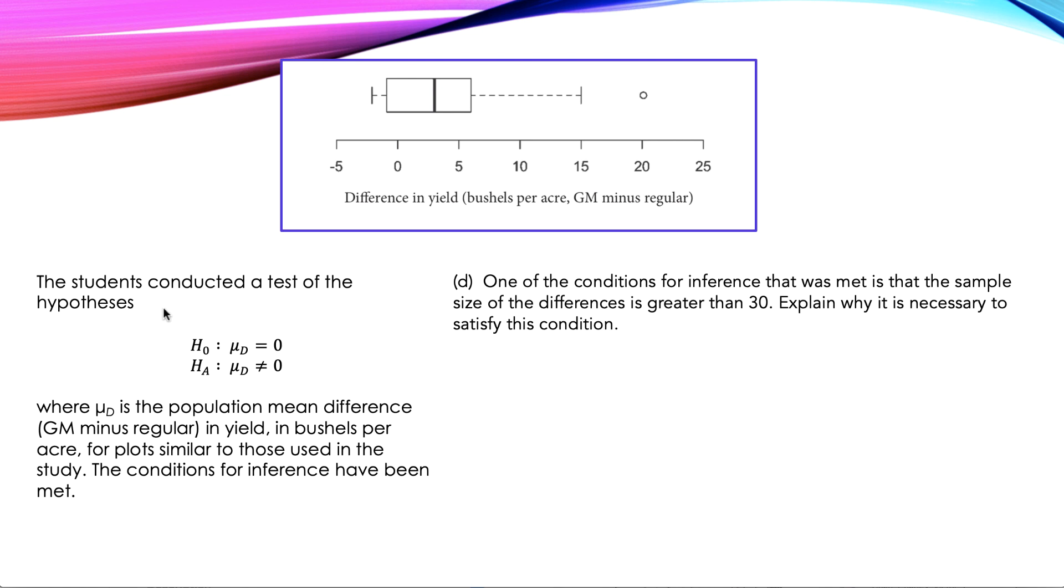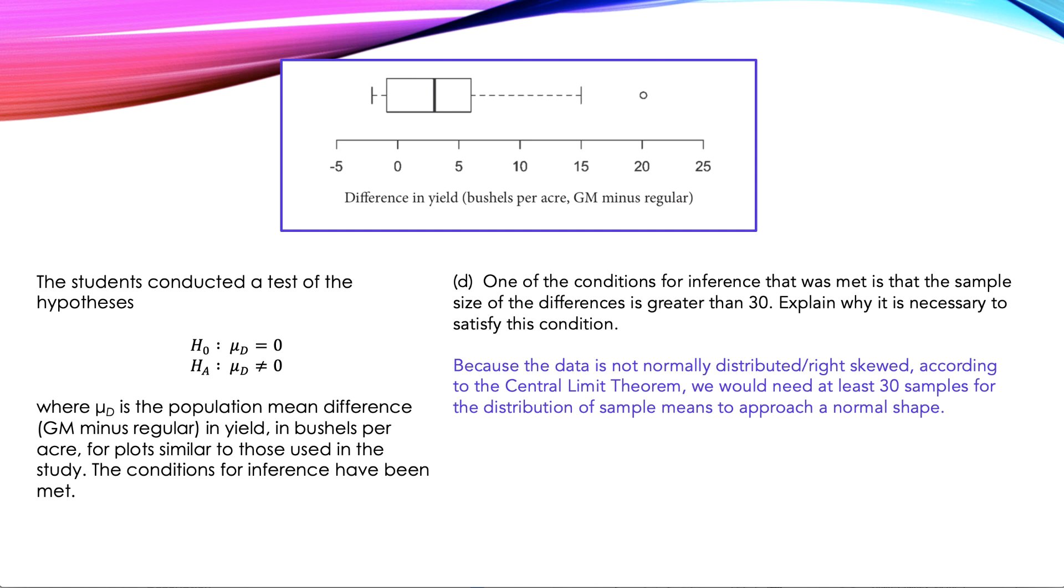In this part of the question, we're told that the students conducted a hypothesis test and that the conditions for inference have been met. Part D: One of the conditions for inference that was met is that the sample size of the differences is greater than 30. Explain why it is necessary to satisfy this condition. If we look at our box and whiskers plot, we can see that we are right skewed. And in stats, we have this thing called the central limit theorem. When your data is not normally distributed, you need to have a sample size of more than 30. Here's my response: Because the data is not normally distributed or right skewed, according to the CLT, we would need at least 30 samples for the distribution of the sample means to approach a normal shape.